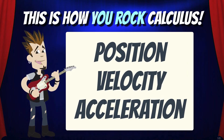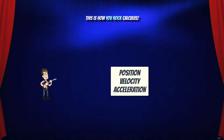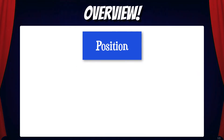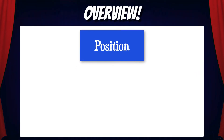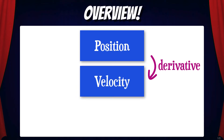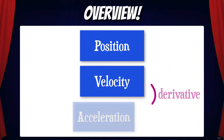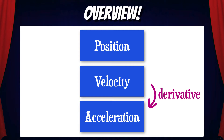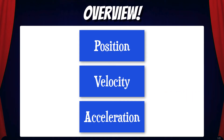Hey everybody, in this video we're going to learn about position, velocity, and acceleration. Let's start by looking at an overview of how these are related. The derivative of a position function is a velocity function, and the derivative of a velocity function is an acceleration function. Let's take a look at why this works.